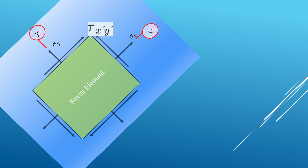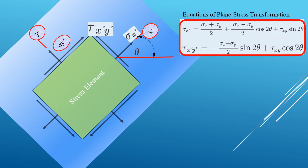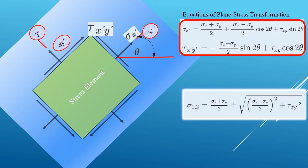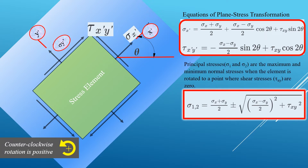Basically, X becomes X prime and Y becomes Y prime, and we calculate sigma X prime and sigma Y prime. We can calculate these stresses using the stress transformation equations, and we can also calculate the principal stresses sigma 1 and sigma 2, which are the maximum and minimum normal stresses when the element is rotated to a point where the shear stresses are zero.